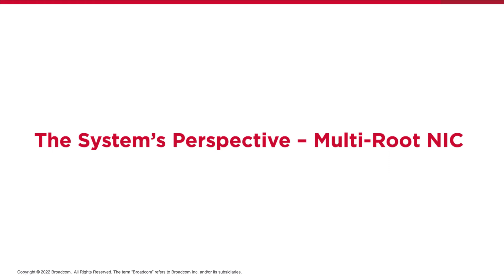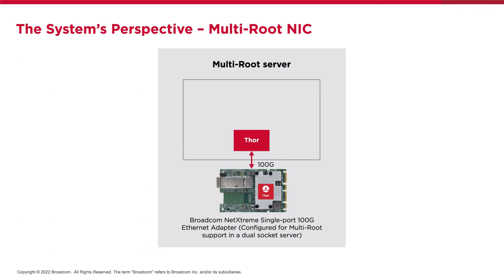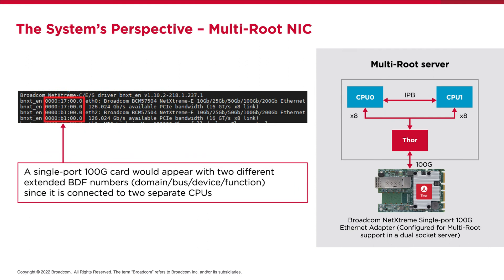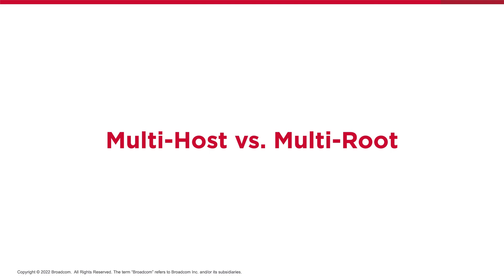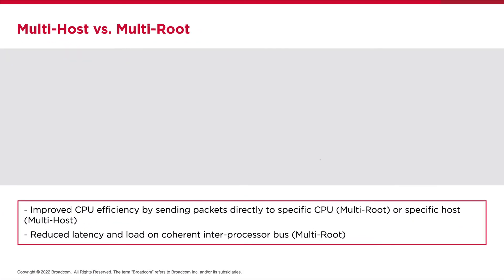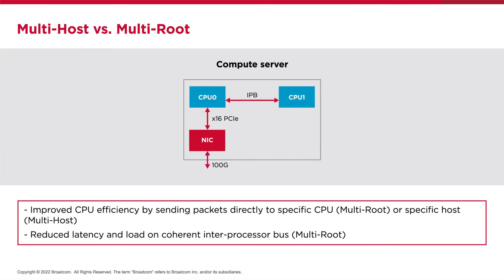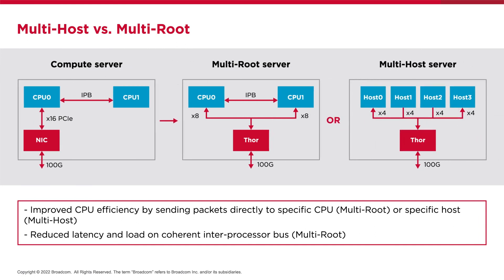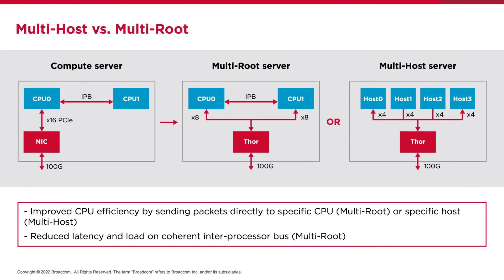Looking at this from the system's perspective: in this example, we're using a single-port 100 gig Broadcom Thor-based adapter which has been bifurcated into two eight-lane links, each routed to a different root complex within the same server. That now appears to the host OS as two interfaces — scanning the PCIe bus shows that each of the interfaces is on a different bus. This slide compares single-host versus multi-host versus multi-root. We see examples of a single-host multi-socketed server and how it can route the NIC either traditionally or by leveraging multi-root. On the right, multi-host is represented, and you can appreciate the similarities to multi-root at least from the NIC's perspective.